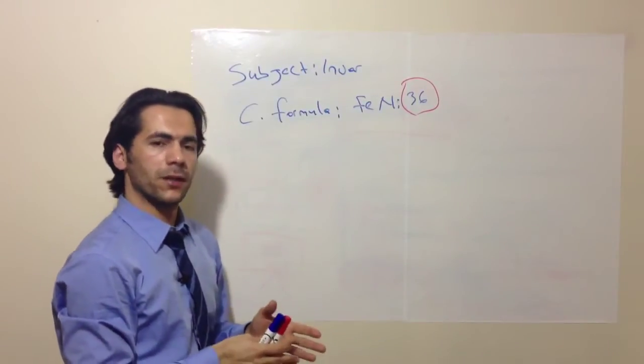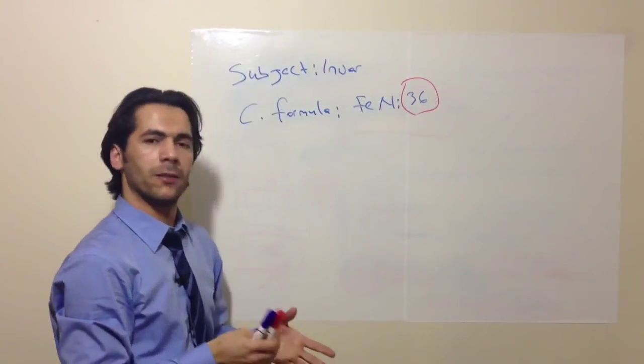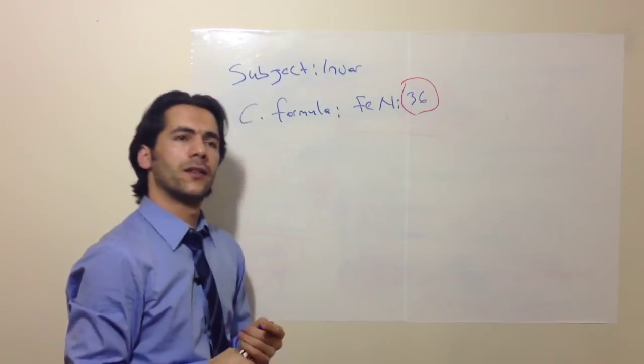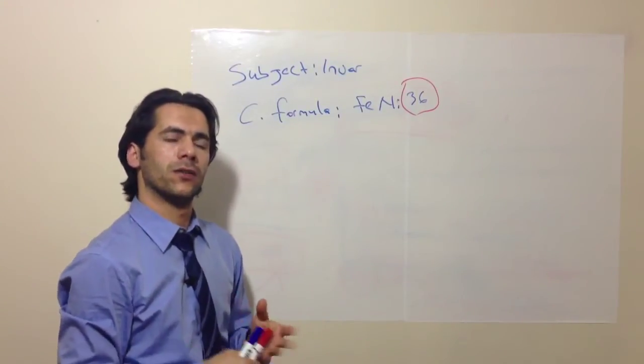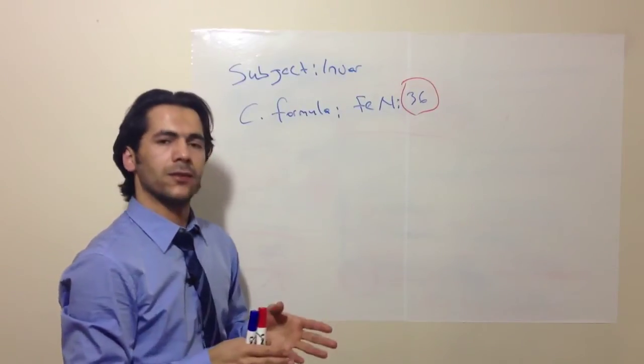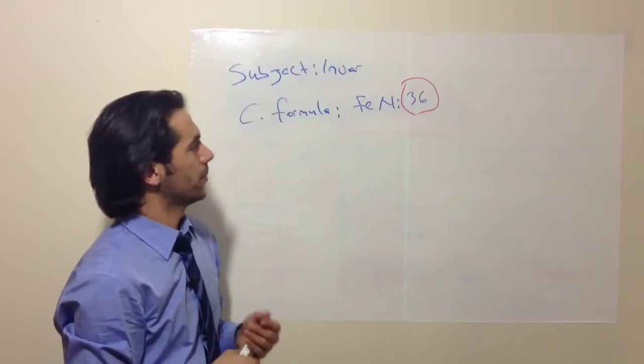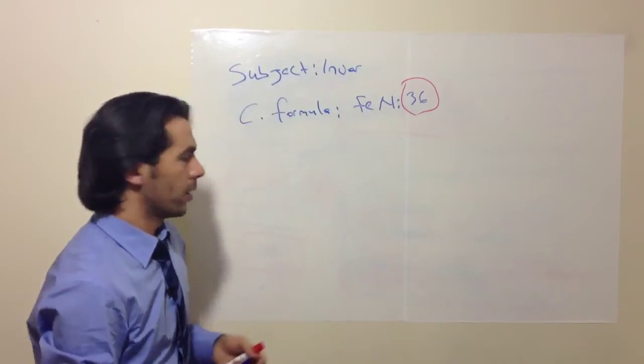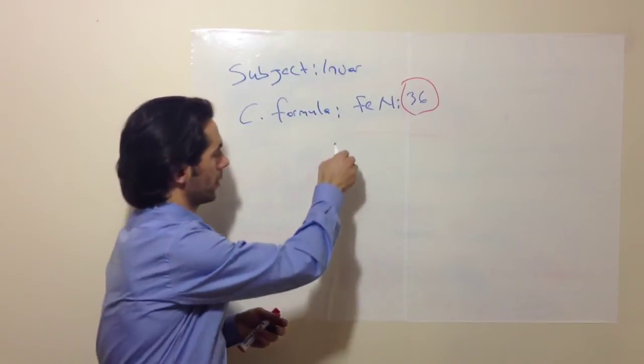If we consider price of nickel, it is very pricey element. As you know it fluctuates around $18,500 per ton. So we do need to have a reason to have such high amount of nickel. So this is my demonstration. I will draw you a graph.